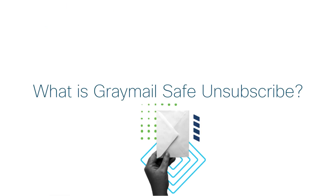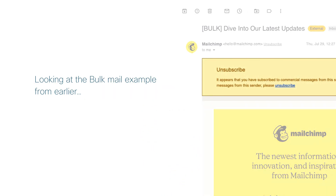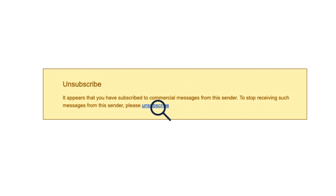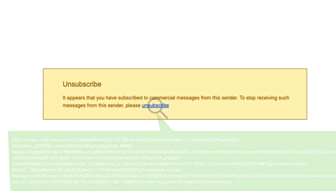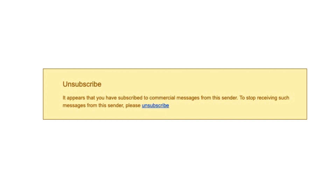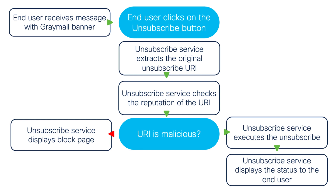An additional benefit of Graymail is the option to enable Safe Unsubscribe. Safe Unsubscribe scans the email and presents the unsubscribe link at the top of the site, providing a secure option for unsubscribing to the end user. Mimicking an unsubscribe option is a popular phishing technique. Our cloud-based unsubscribe service extracts the original URI, checks the reputation, and then performs the unsubscribe process on behalf of the end user.